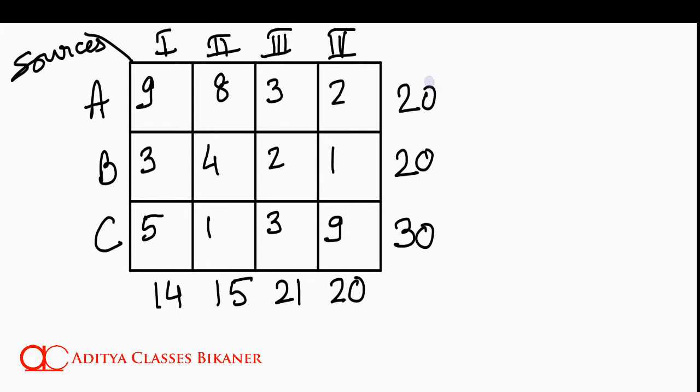A can produce 20, B is producing 20, C is producing 30, while markets first, second, third, and fourth need 14, 15, 21, and 20 units respectively.